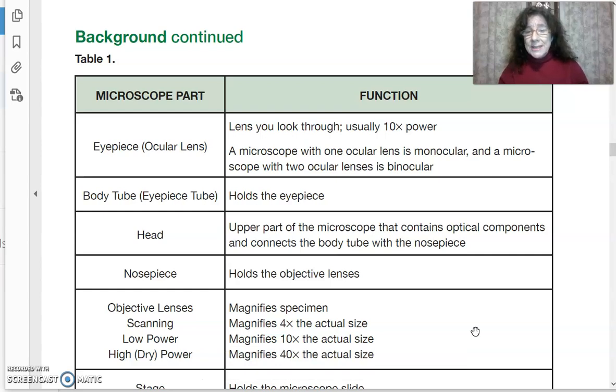If you multiplied your eyepiece times your scanning lens, 10x times 4x, you get 40x magnification. And if you get down to your high power lens, you multiply your eyepiece 10x times 40x for the high power, for 400 times magnification. It does a pretty good job.